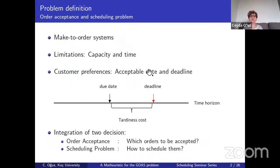When we look at the order acceptance and scheduling problem, we see that its origins come from what we know as make-to-order systems. In such systems, as the name implies, production happens based on orders given by customers. The idea is to customize the products required by customers. Also, in other cases, keeping finished products inventory from the manufacturer's side could be very expensive, so they work make-to-order rather than make-to-stock.